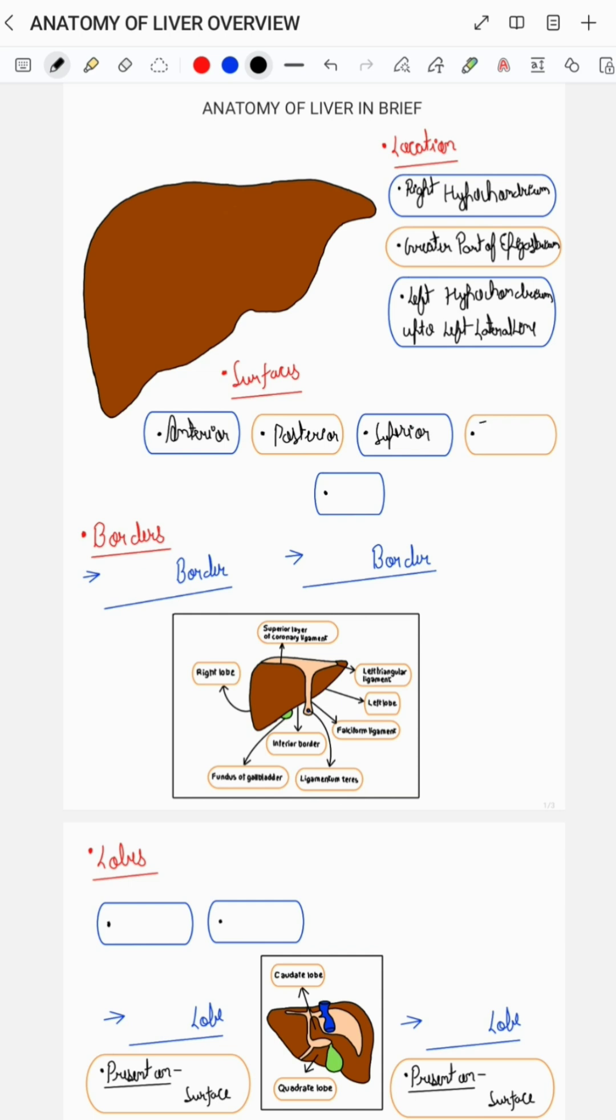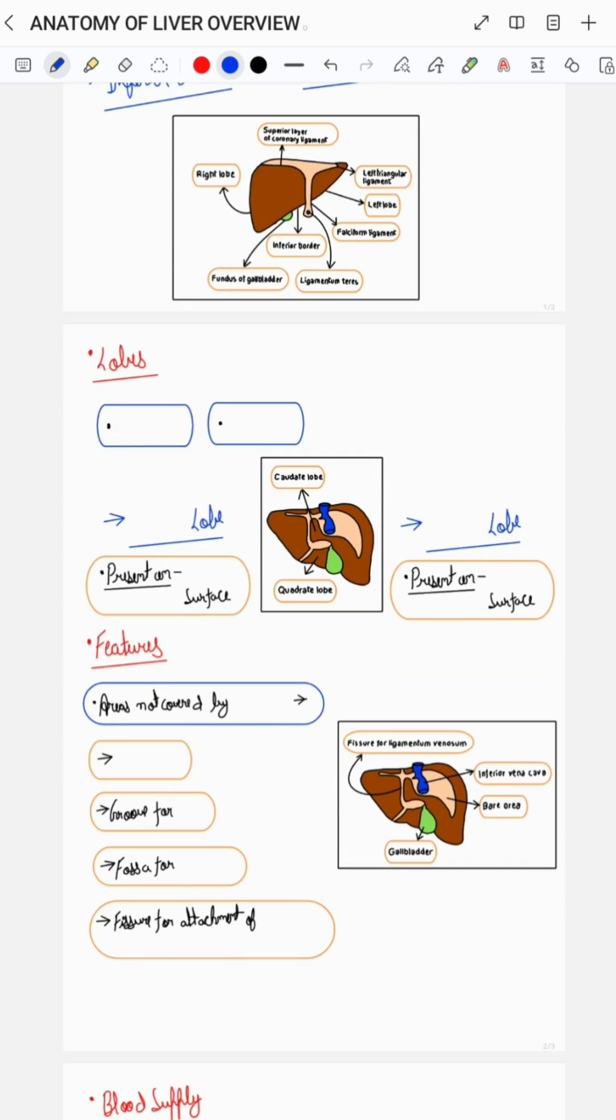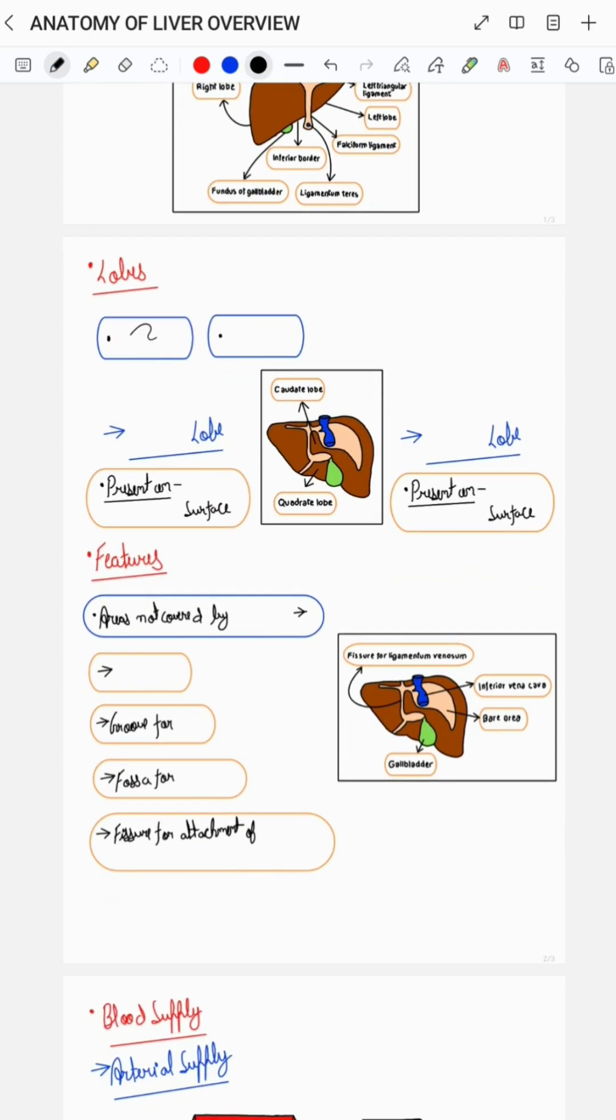Liver has got two borders: the inferior border and the anterior border. Liver is divided into two lobes, the right lobe and the left lobe. Also, the liver has the caudate lobe and the quadrate lobe.